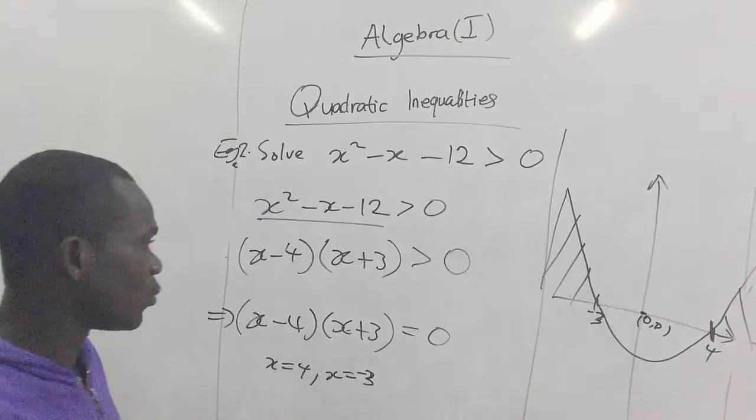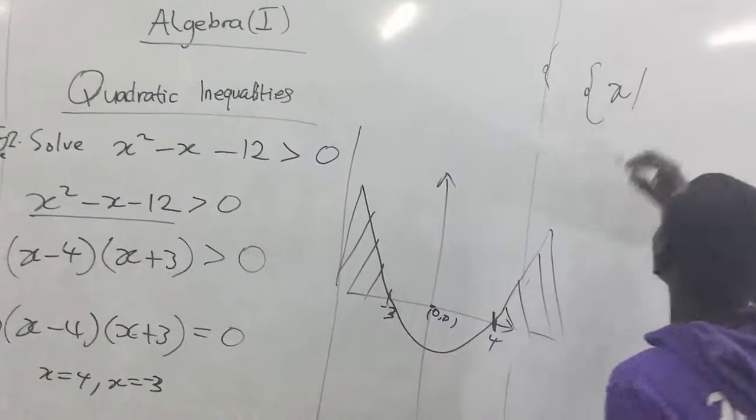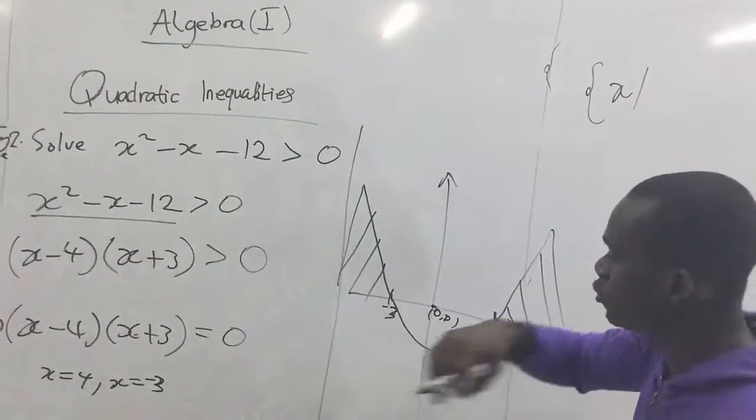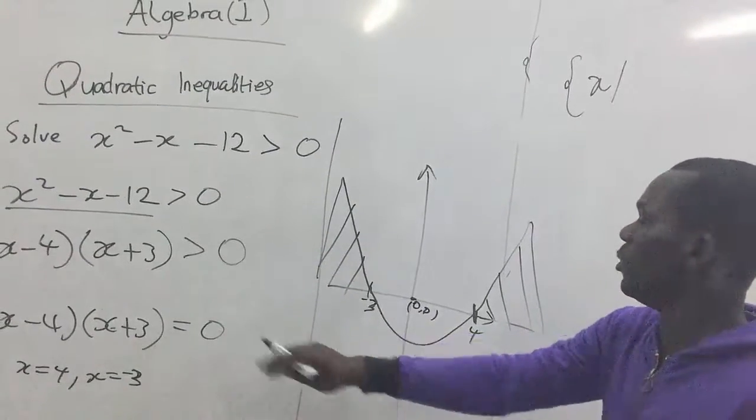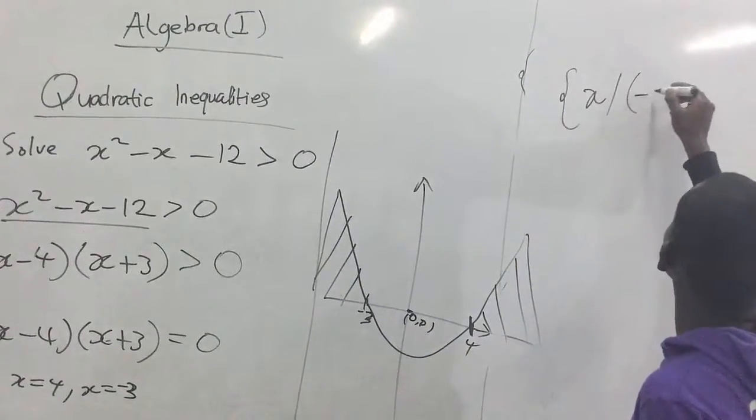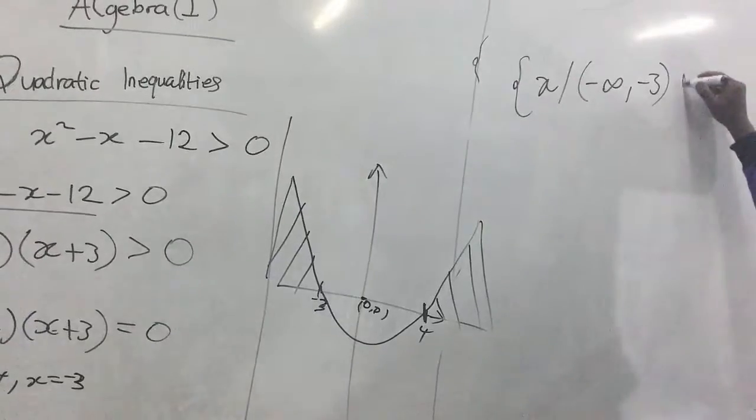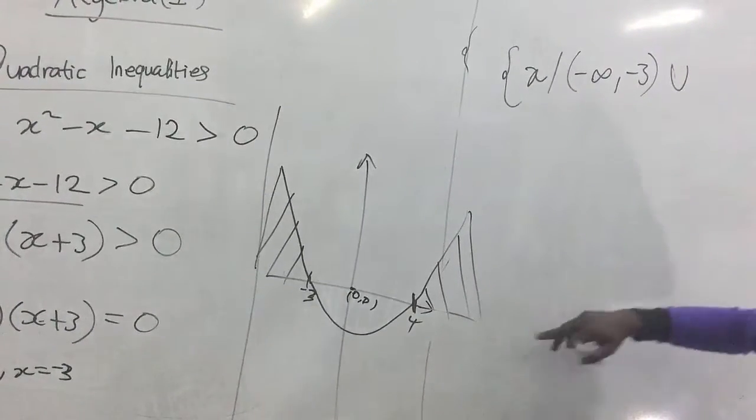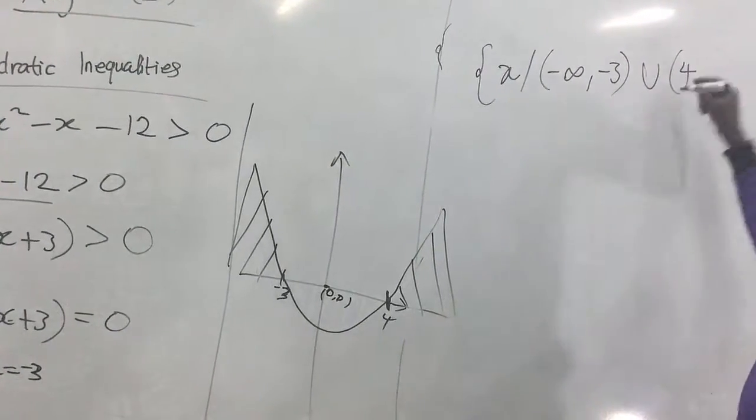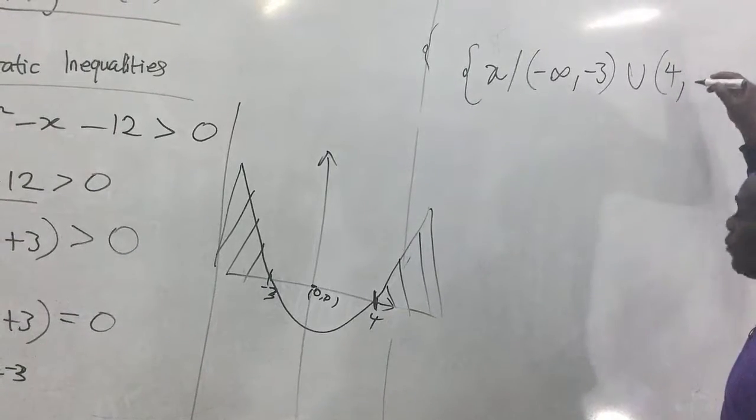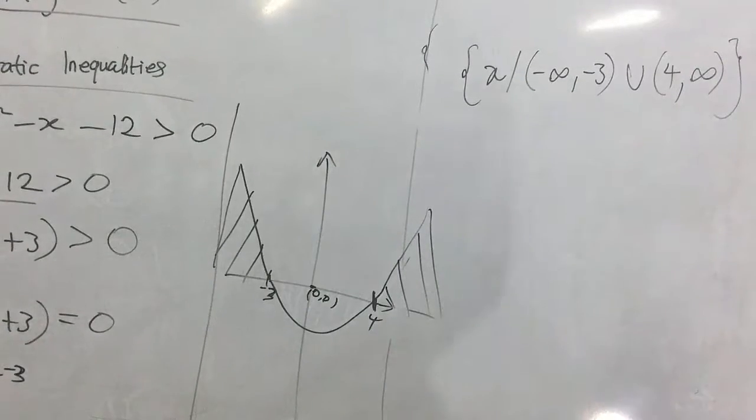So we are going to write our solution set as x, that we have x belonging to negative three and below, so we have that as this in interval form, union, that is in addition to this, greater than four. So four itself is not part, we use a bracket and we are going to positive infinity.